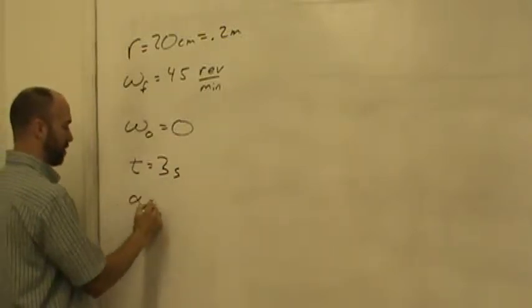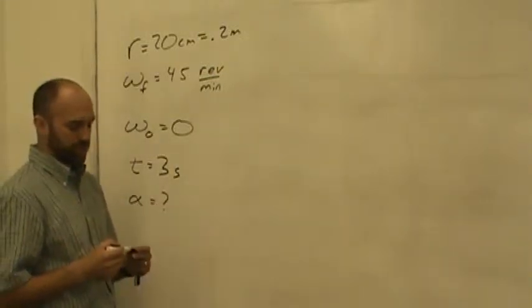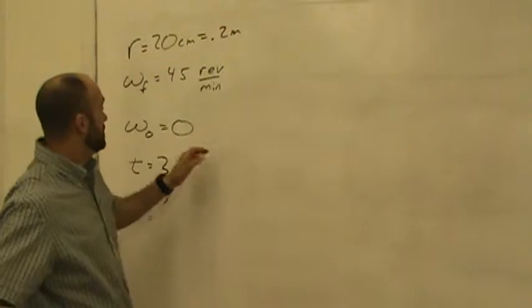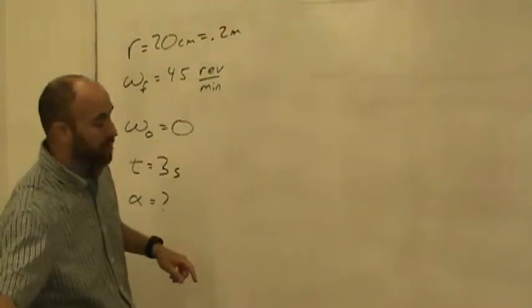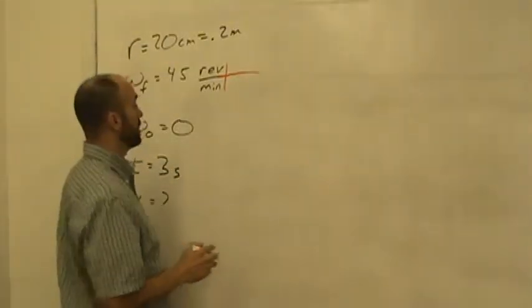And we're told that it takes three seconds to do this. And we're asked for alpha. First thing you should notice is that this is not standard units here. So we need to change some units here. We need to break out some railroad tracks.